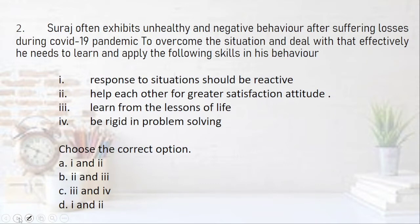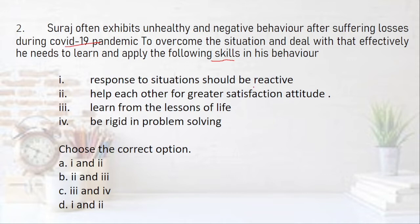Now the second question — this is a multiple choice where you have been given 4 options and you have to choose the correct option. This is a reasoning question: Suraj often exhibits unhealthy and negative behavior after suffering losses during the COVID-19 pandemic. This type of behavior is prevalent in many people who have suffered losses, whether financial or personal. To overcome the situation effectively, he needs to apply the following skills. Read all the words when dealing with MCQs — don't skip any word.